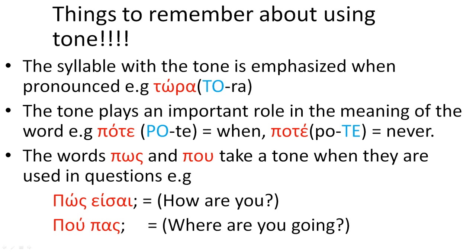The words pos and pu take a tone when they are used in questions. For example, pos ise — how are you? Pu pas — where are you going? Both of them consist of exactly one syllable, but because they are used in a question, they also take a tone.